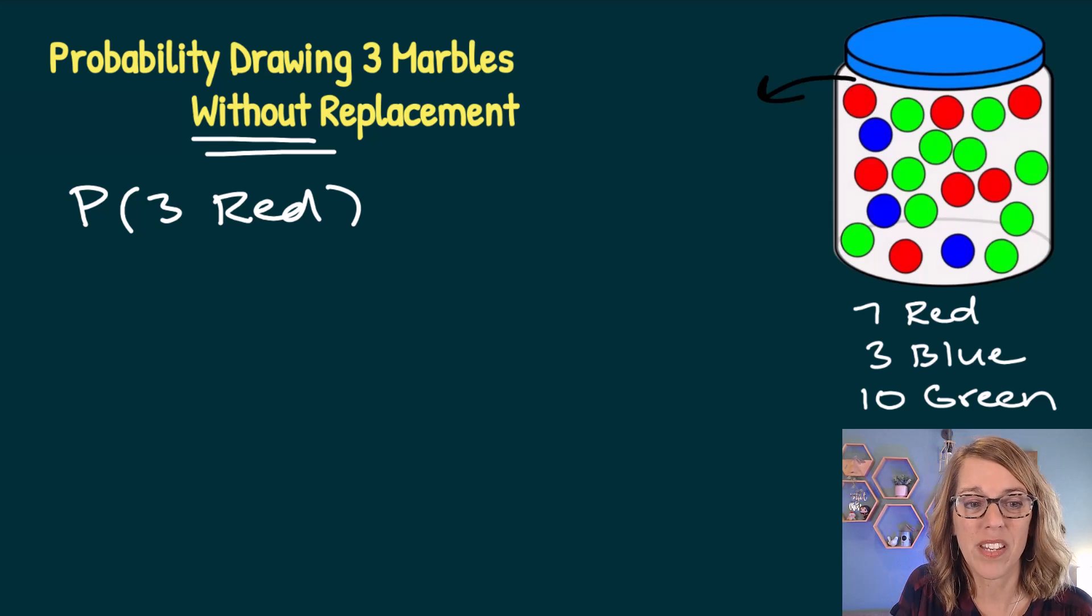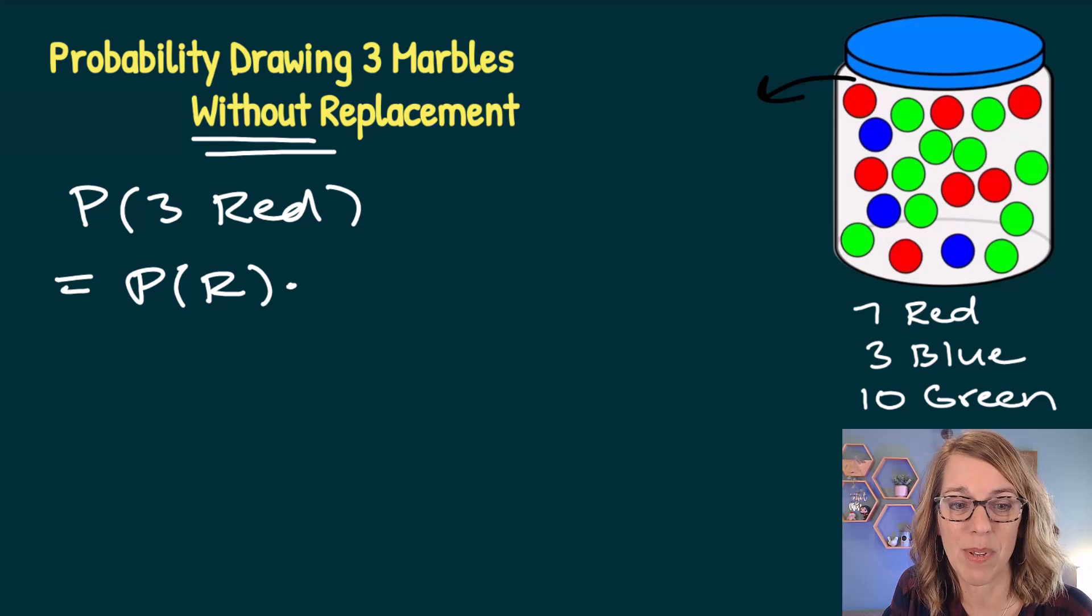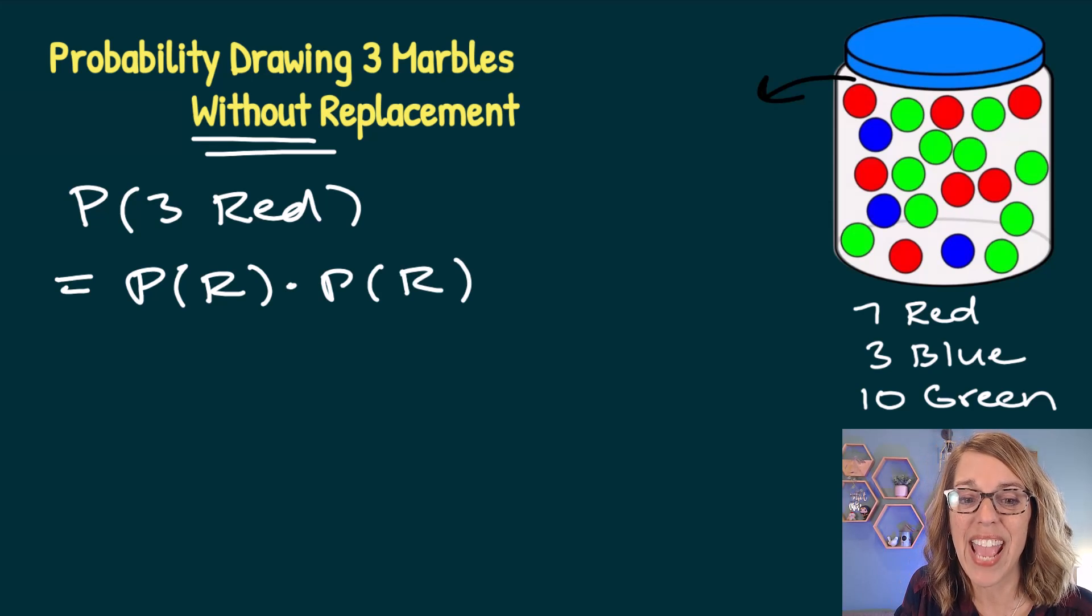But my probability ends up being the same setup. So I'm going to have the probability of red and, which is going to be multiplied, the probability of red and, so I'm multiplying that probability of red.